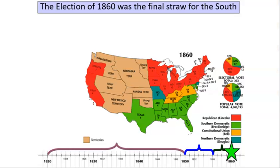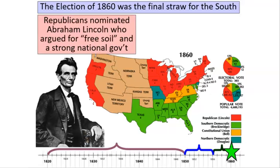The next year is 1860. The election of 1860 is really going to be the final straw for the South, and will eventually lead to the South trying to secede from the Union and the start of the Civil War. In that election of 1860, this guy right here, Abraham Lincoln, the tall man from Illinois, is going to be nominated. He's going to argue for free soil and a strong national government.